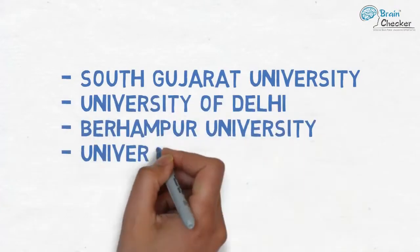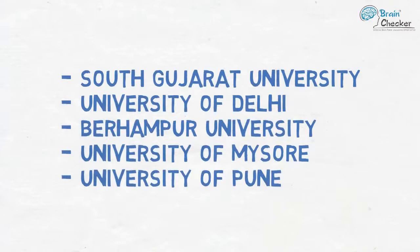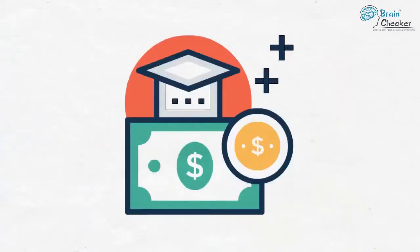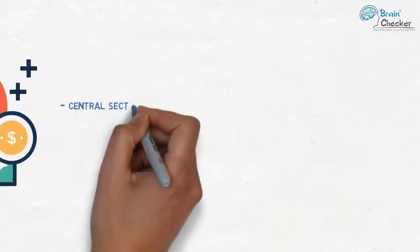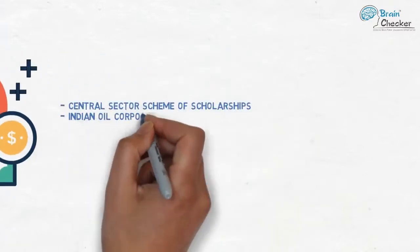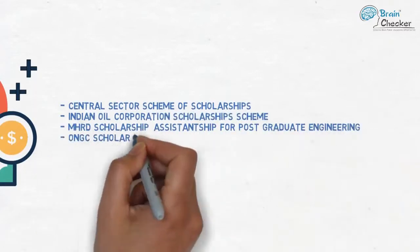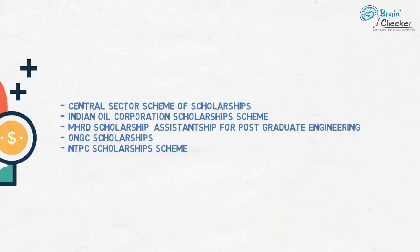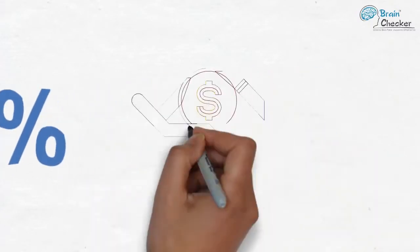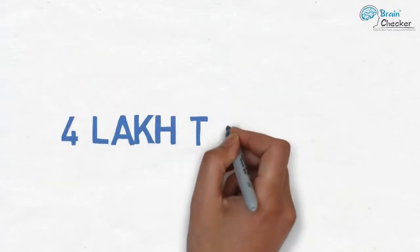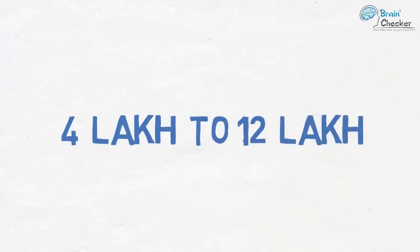For funding the course, various scholarships are currently available like Central Sector Scheme of Scholarships, Indian Oil Corporation Scholarship Scheme, MHRD Scholarship, assistantships for postgraduate engineering, ONGC Scholarships, and NTPC Scholarships Scheme. Various banks offer up to 90 percent education loans to students at attractive rates and repayment options. The average college fees for the four-year course can range between 4 lakh to 12 lakh rupees depending on the type of college you choose.